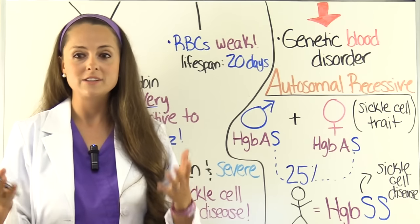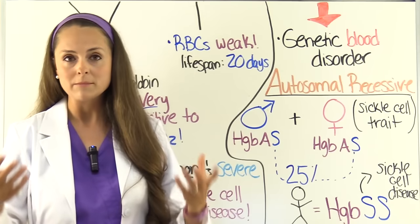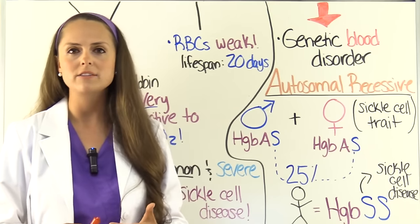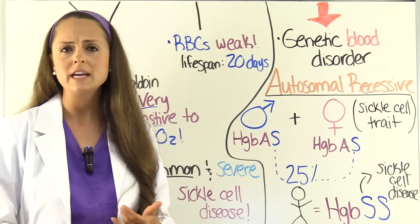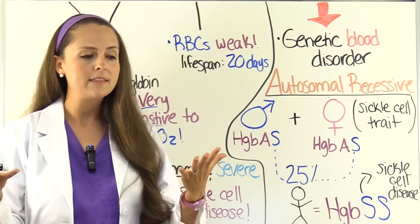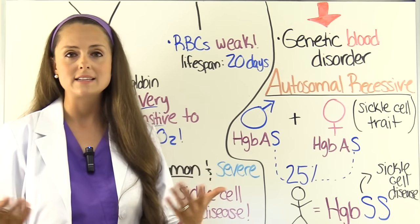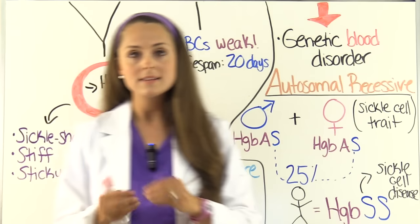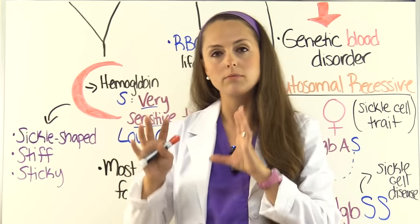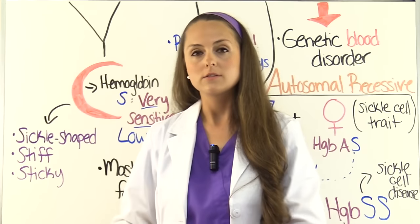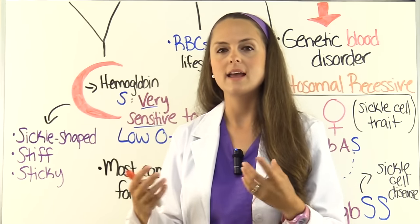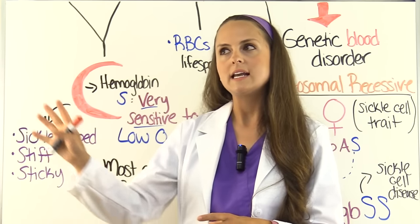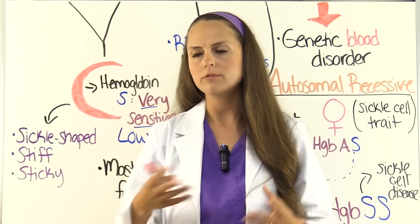Typically, a parent brings the child in saying the child is extremely fussy, crying all the time, seemingly in pain, has a fever, and has swelling in their hands and feet — called dactylitis, or hand and foot syndrome. This is where these red blood cells have sickled, sticking together and blocking blood flow to those extremities and organs, causing lots of pain and swelling.